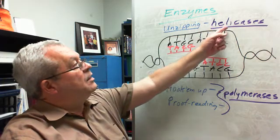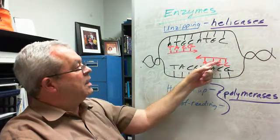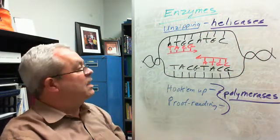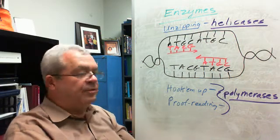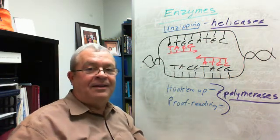And so, the helicases unzip, and the polymerases do what? They're the hook-em-up enzymes. They first hook up the new nucleotides and then go over and proofread their work. All right. That's it on the enzymes.